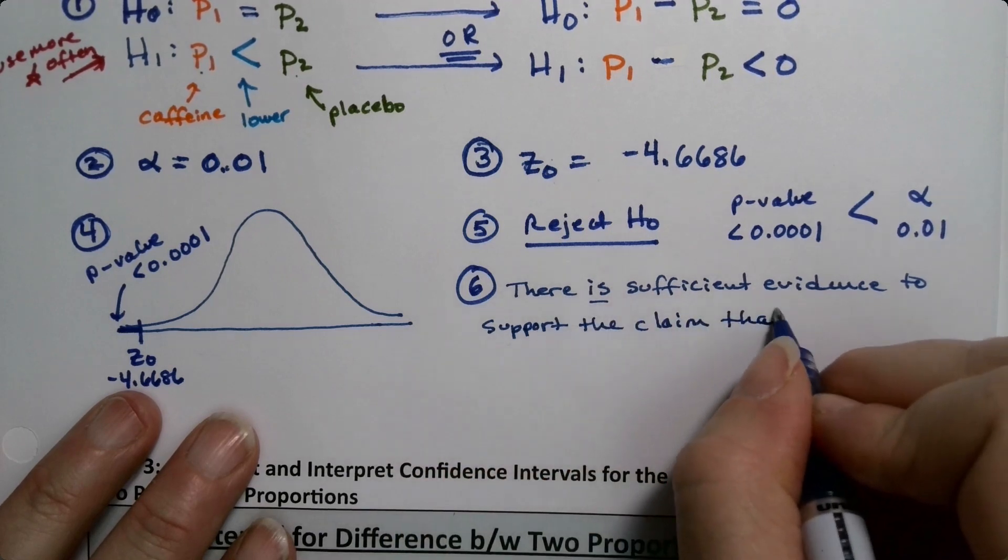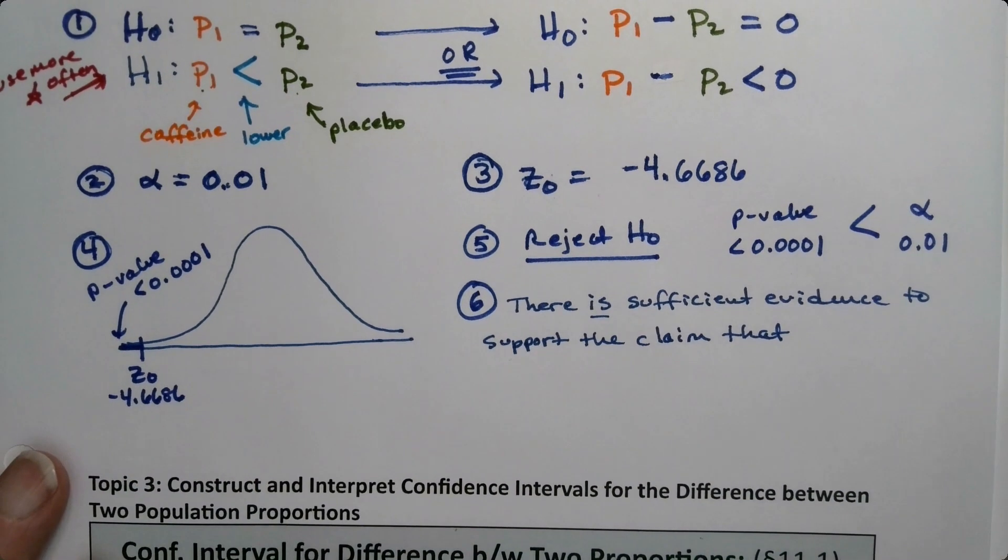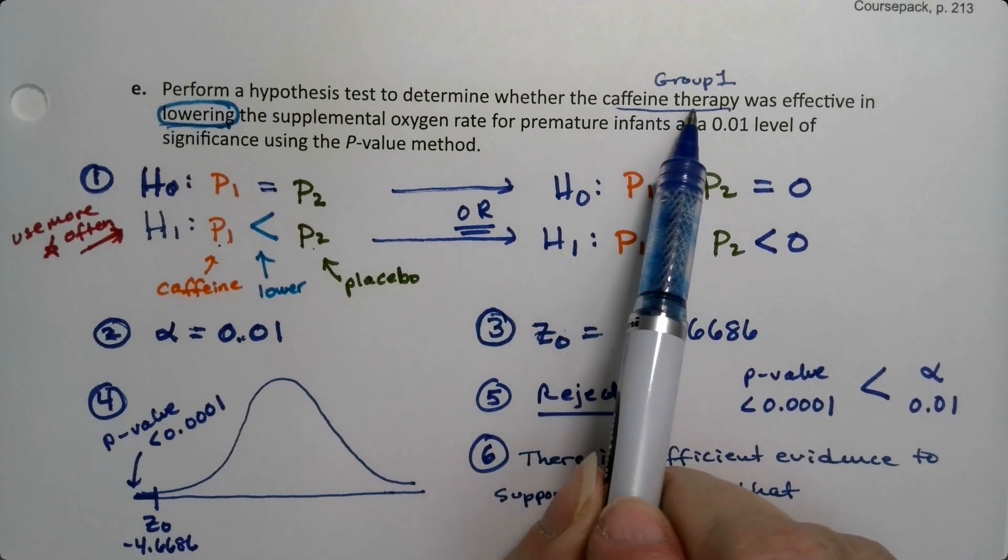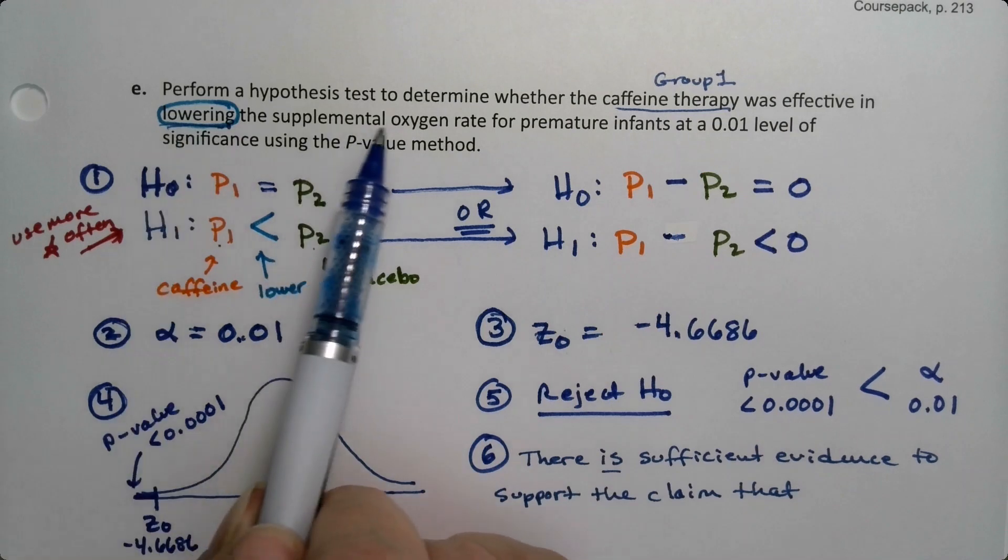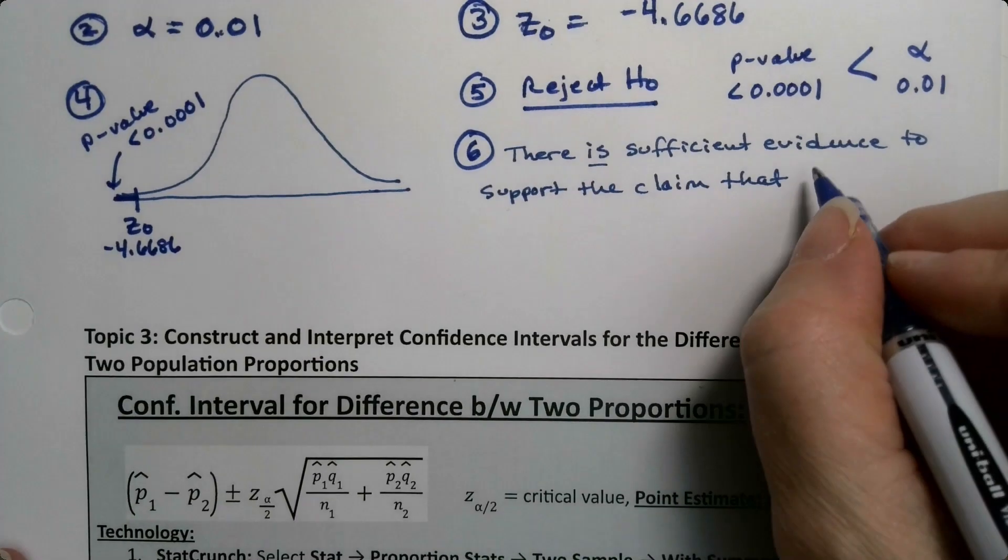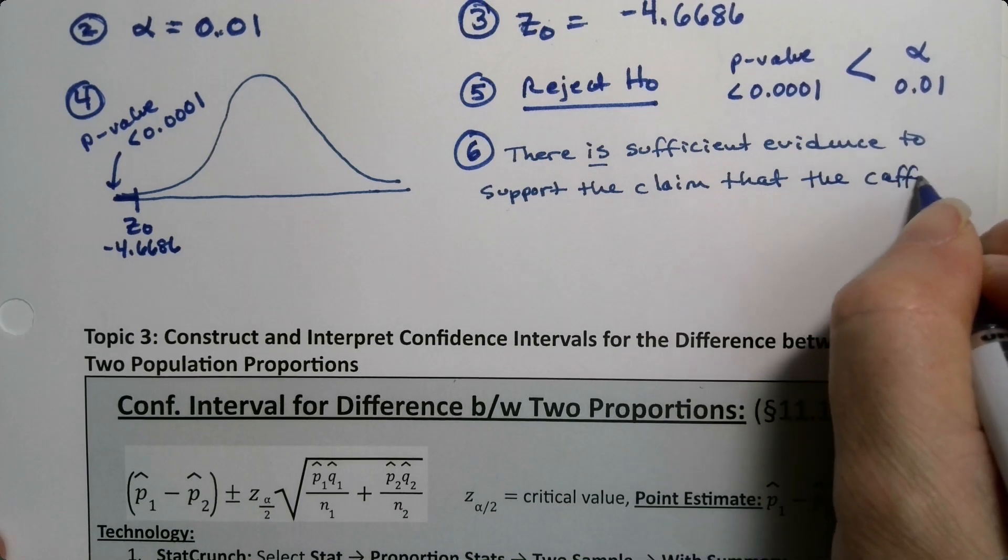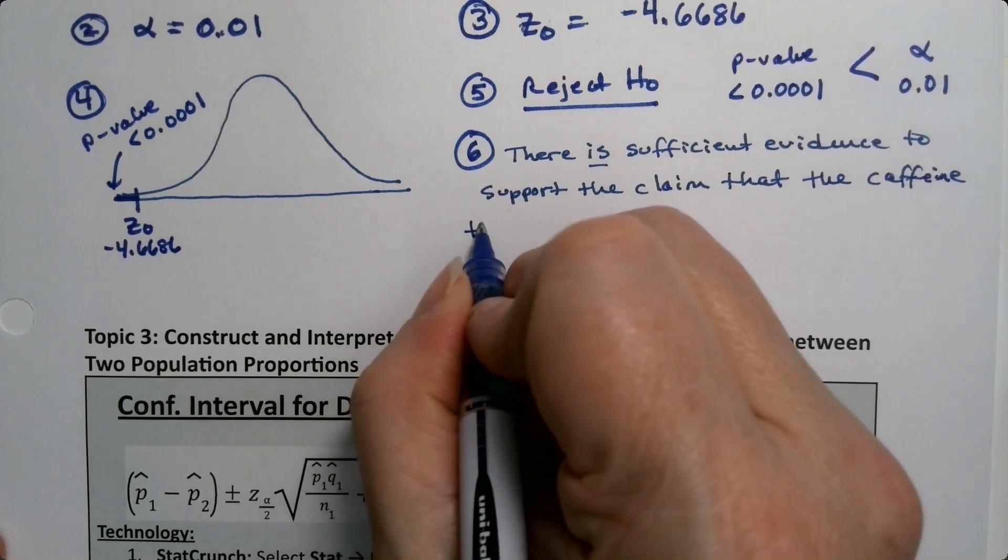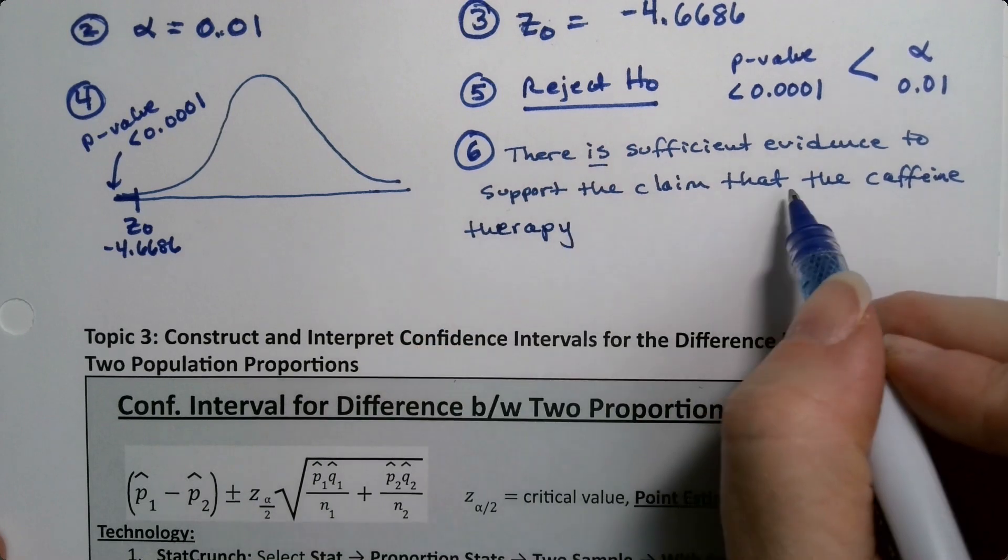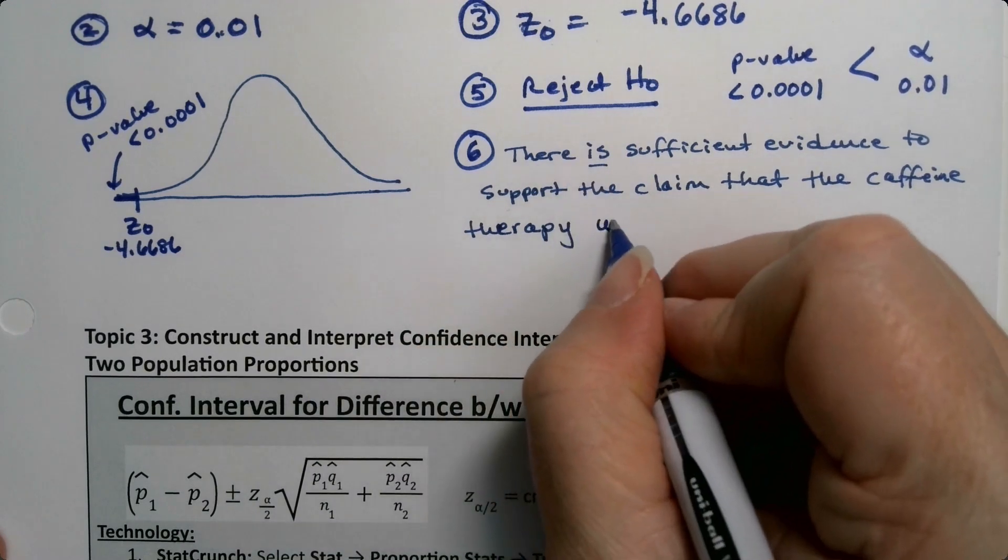And then you kind of want to look up in the problem for where I wrote stuff that are things like it's greater, it's not equal to, it's changed, it's less than. And sure enough right here - the caffeine therapy was effective in lowering supplemental oxygen rate. That's it, you just write that. It's often wherever the direction word is, that will be the claim.